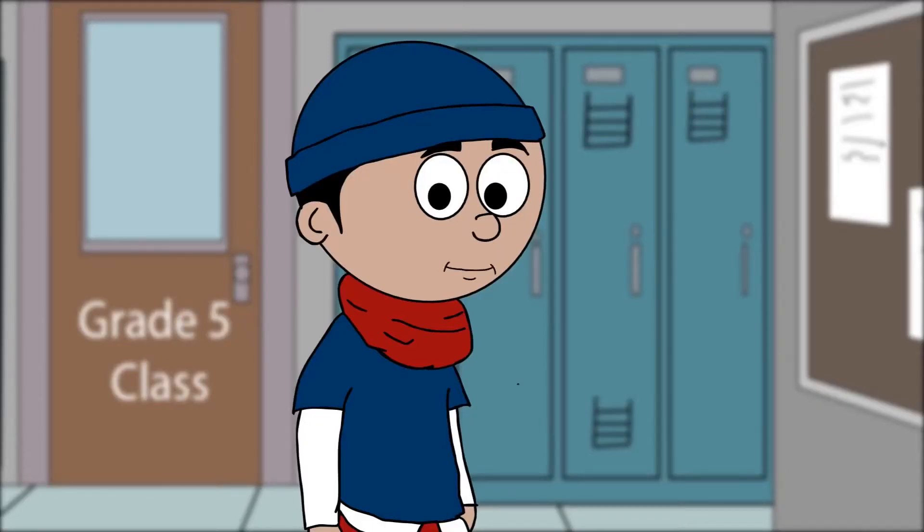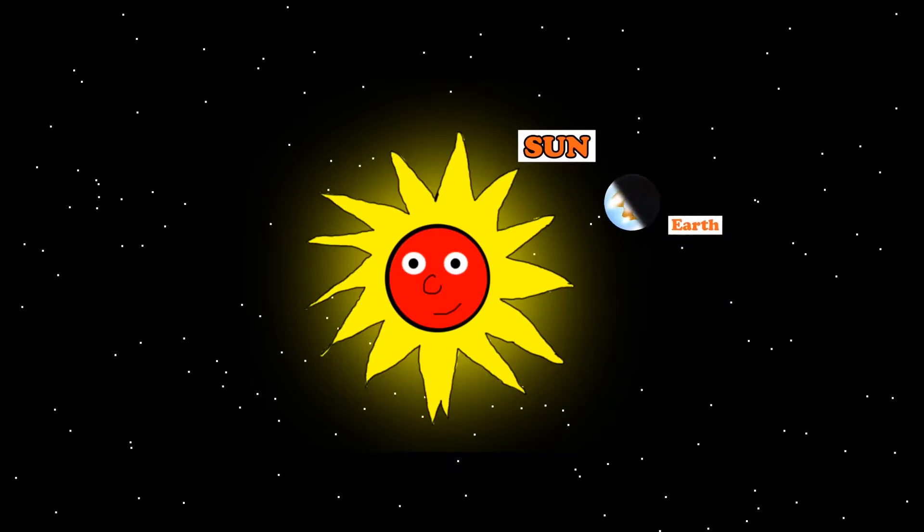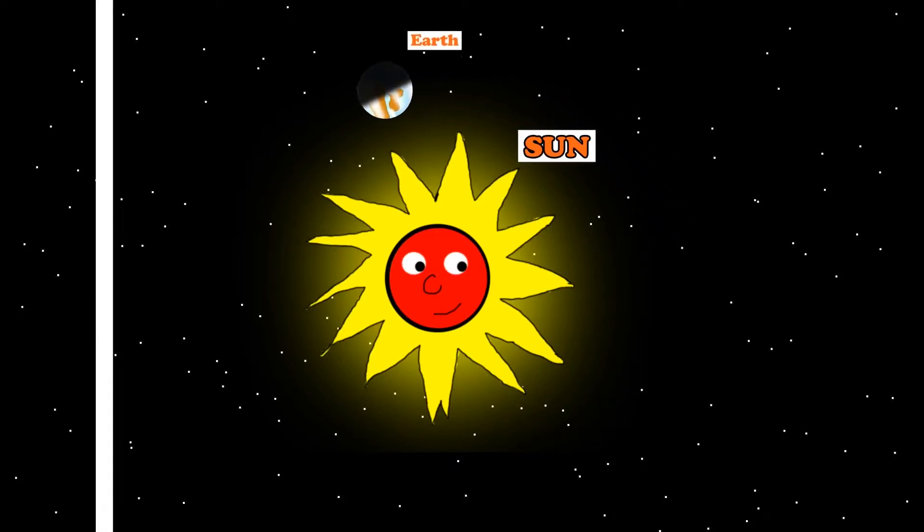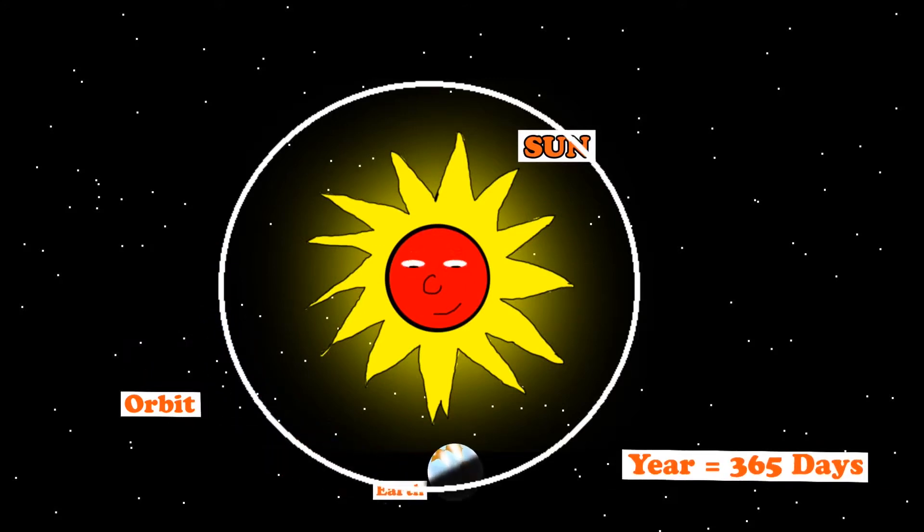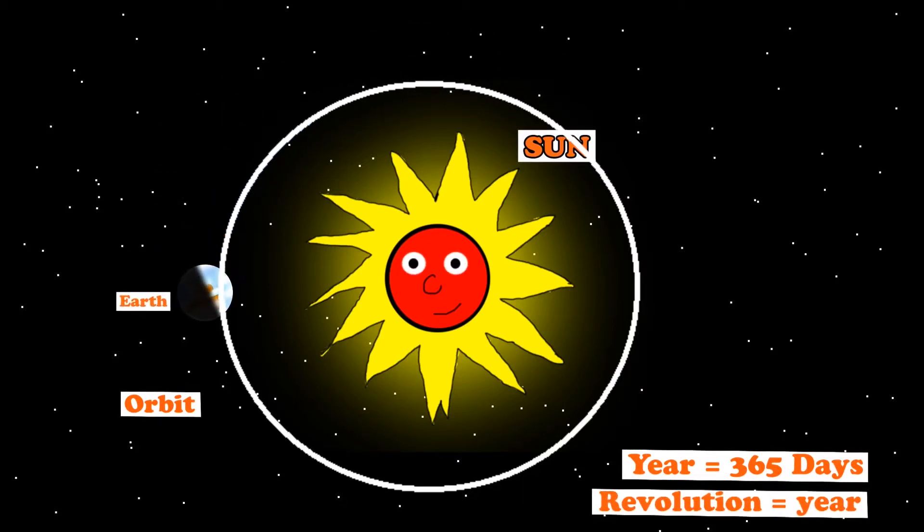But that's not all. The Earth spins around the sun as well in a line called an orbit. It takes the Earth about 365 days to go around the sun. This is called a revolution and it's the same as a year.